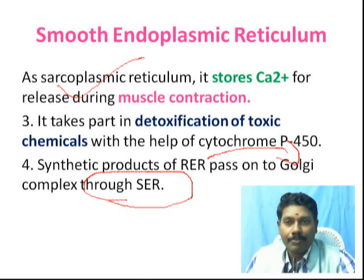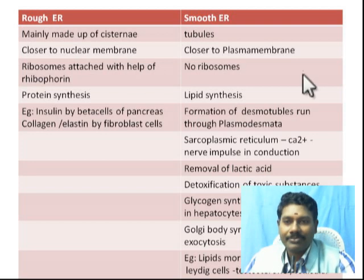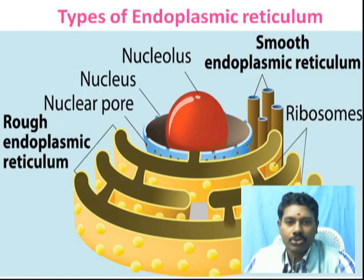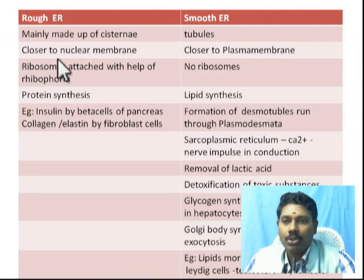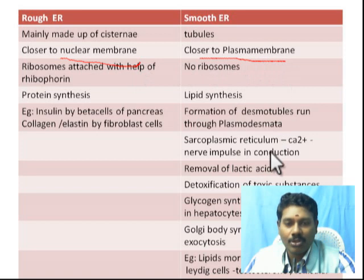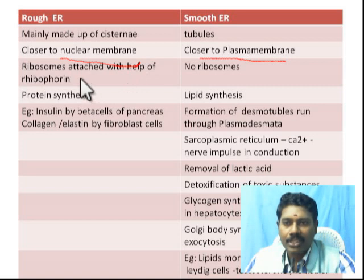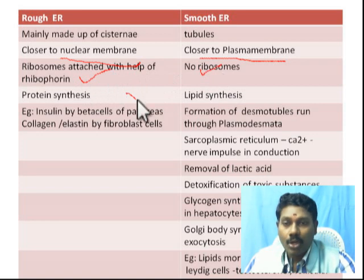To summarize: rough ER is mainly made up of cisternae whereas smooth ER is made up of tubules. Rough ER is very close to the nuclear membrane whereas smooth ER is closer to the plasma membrane. In rough ER, ribosomes are attached with the help of riboforin molecules. Rough ER is involved in protein synthesis whereas smooth ER is involved in lipid synthesis.